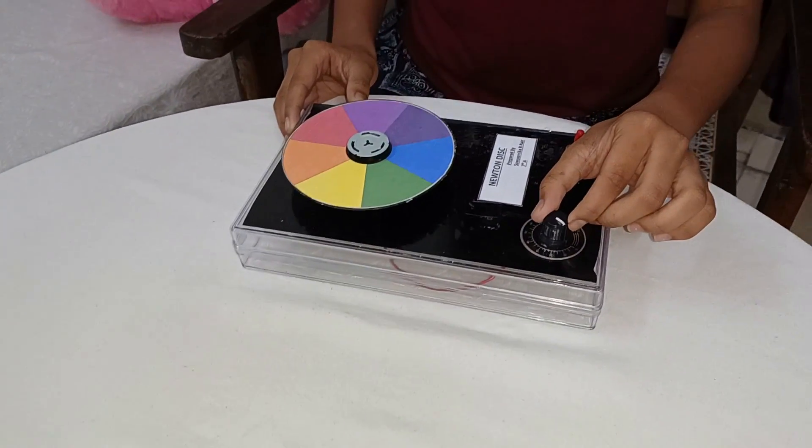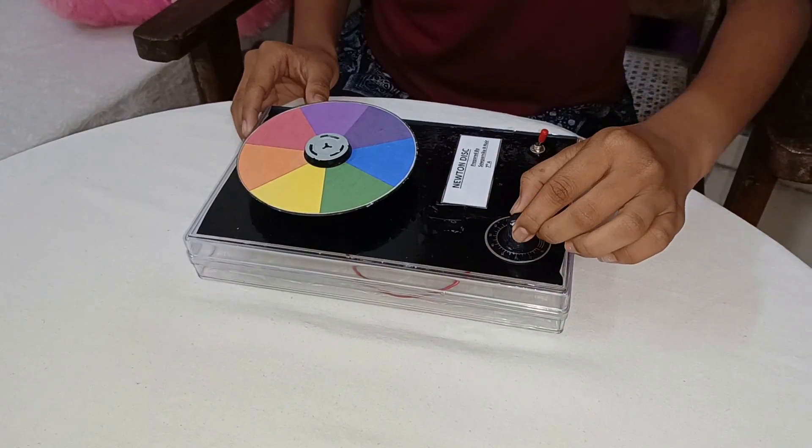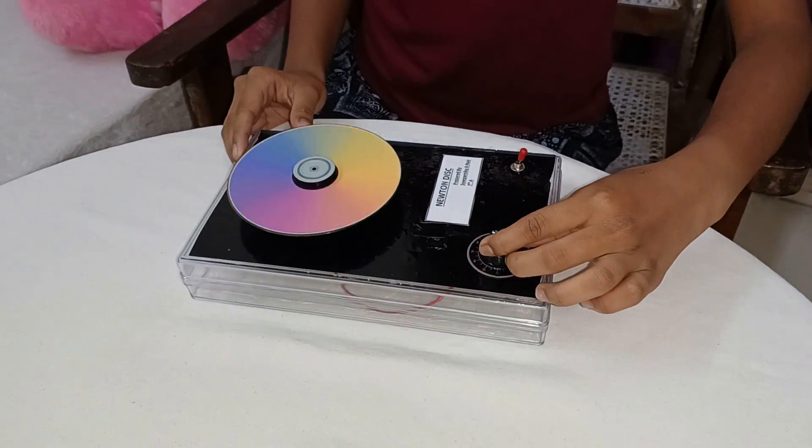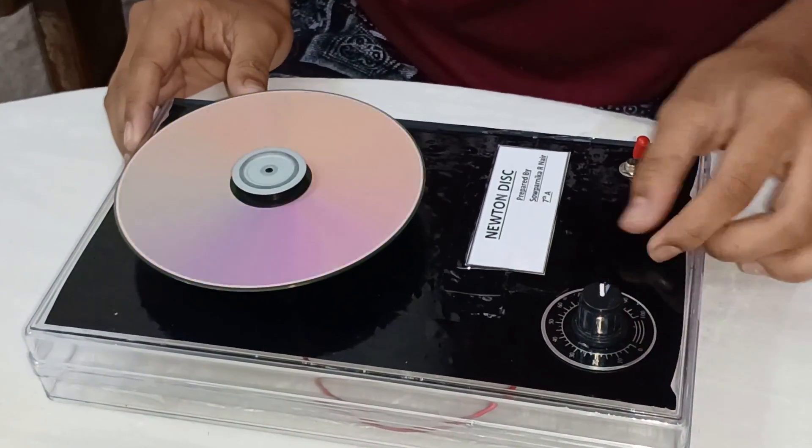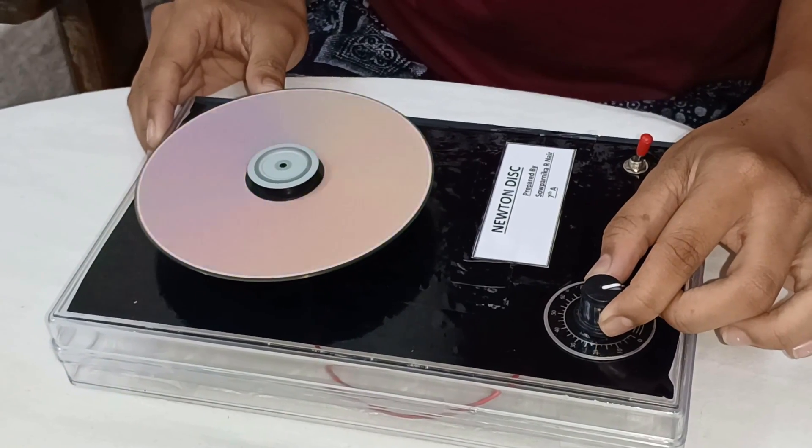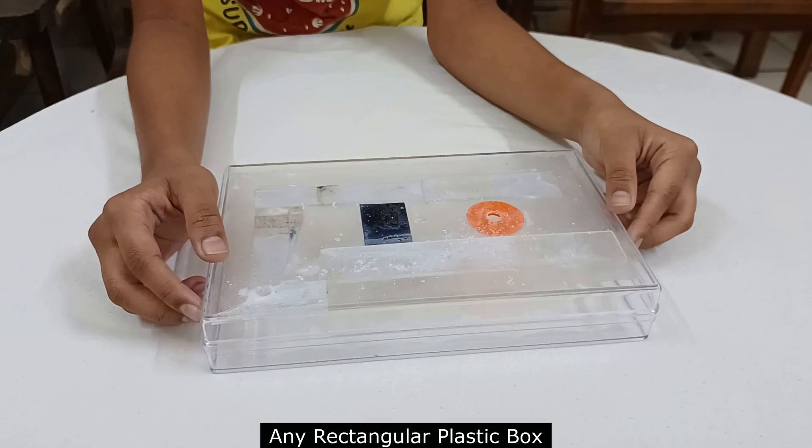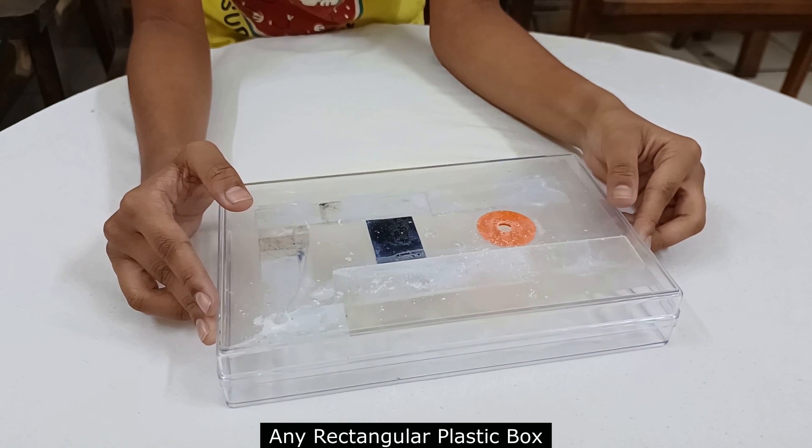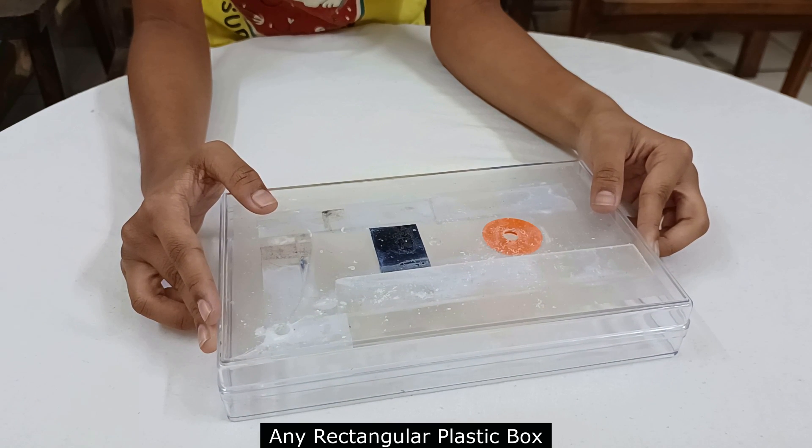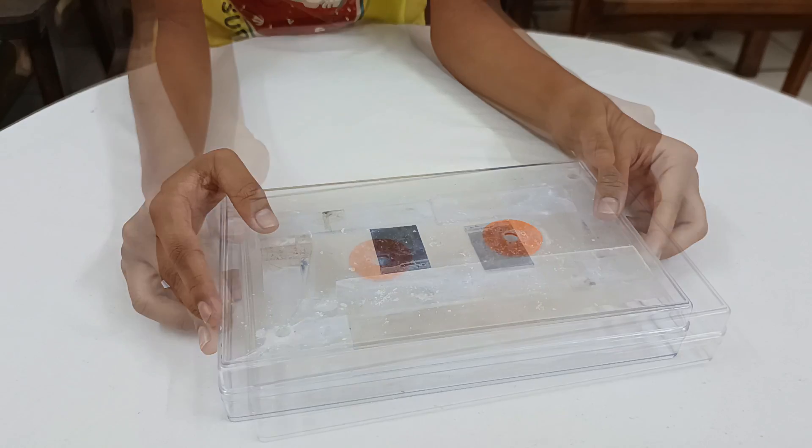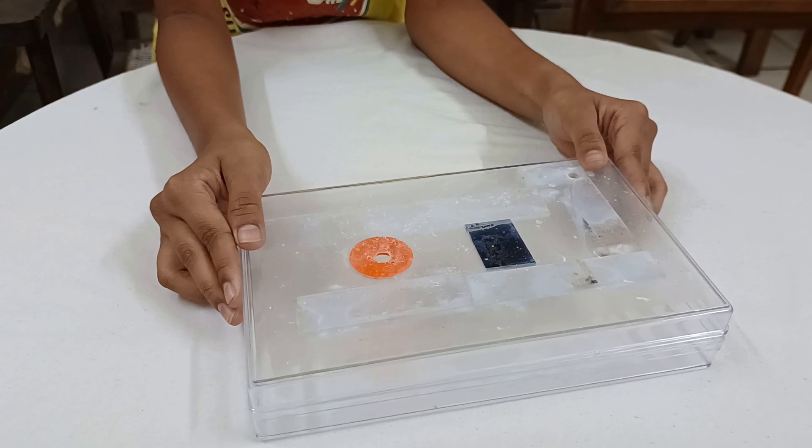Have a look on it. To make the Newton disc, we need some items. In that number one is sweet box. I got this sweet box from my home itself.